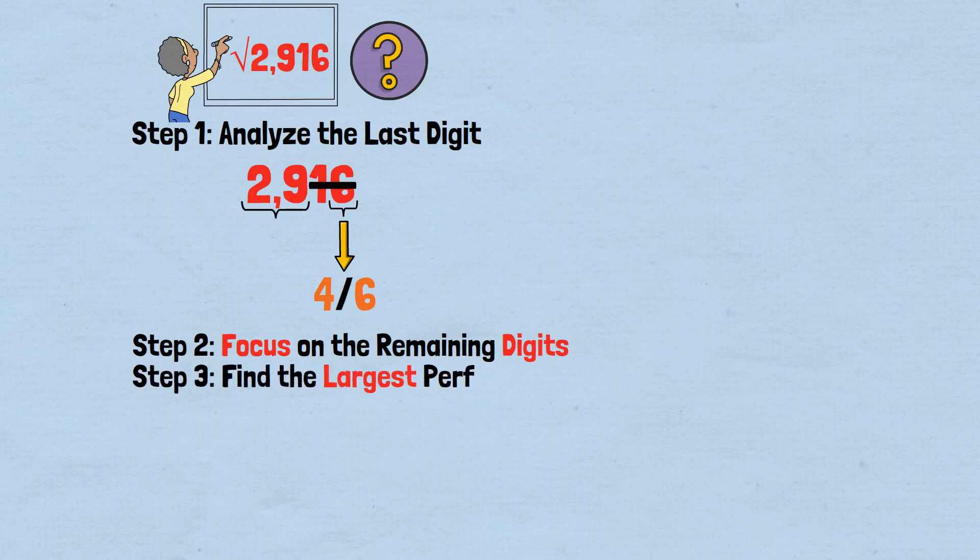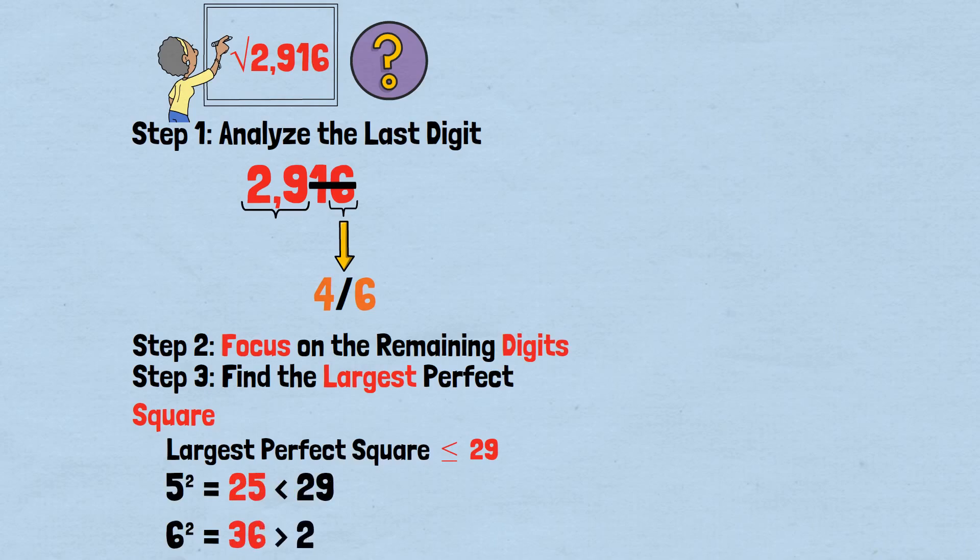Step 3: Find the largest perfect square. What's the largest perfect square that doesn't exceed 29? 5 squared equals 25, less than 29. 6 squared equals 36, greater than 29. So 5 squared equals 25 is our answer, giving us 5 as the first digit. Step 4: We have two candidates. Our potential answers are 54 and 56.